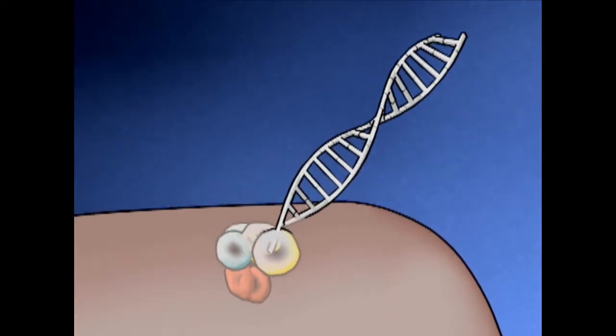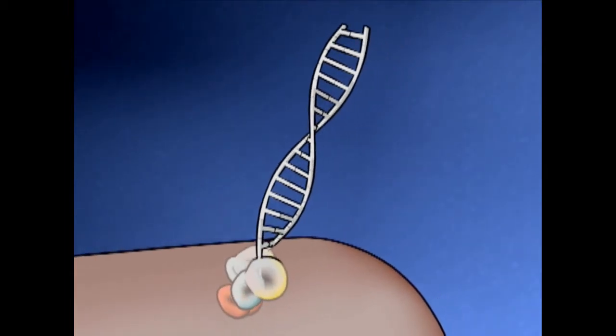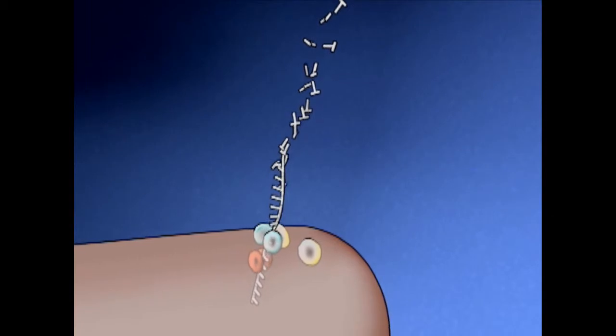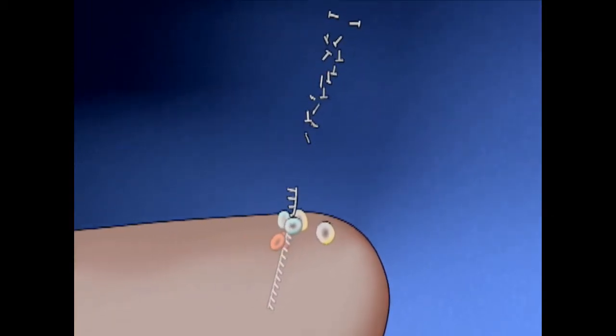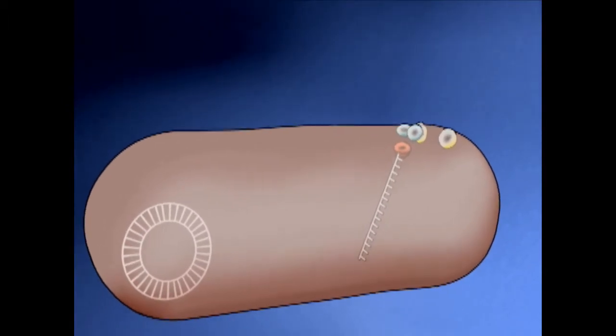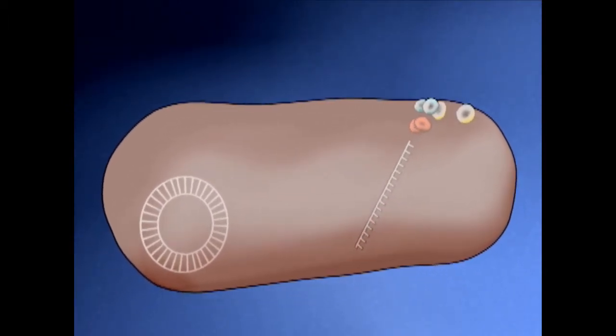A naturally competent bacterium will bind foreign DNA with proteins embedded in its cell wall. Then, a nuclease will split the double helix, and proteins will bring one strand inside the cell to either be recombined as a plasmid or inserted into the bacterium's chromosome.